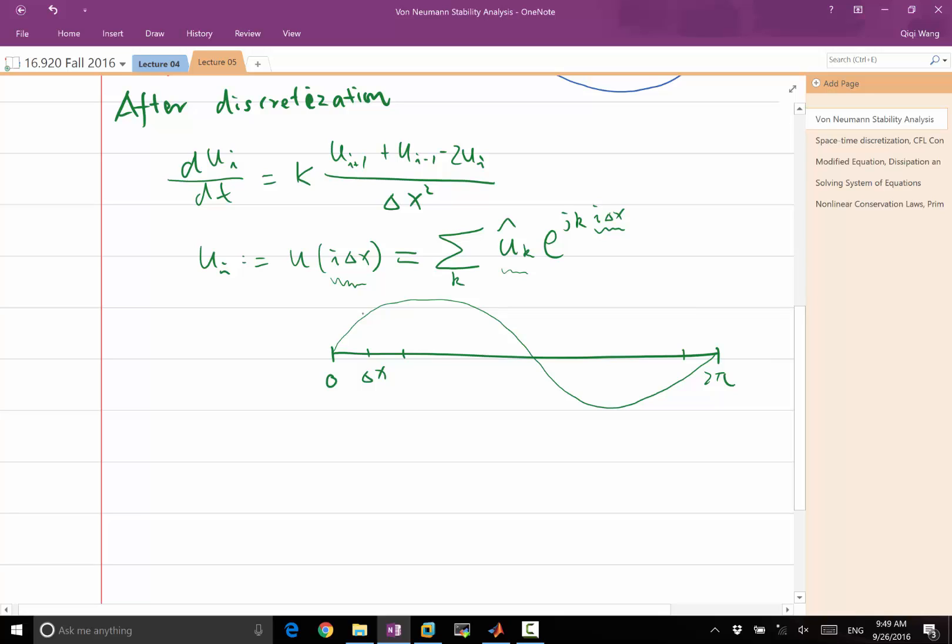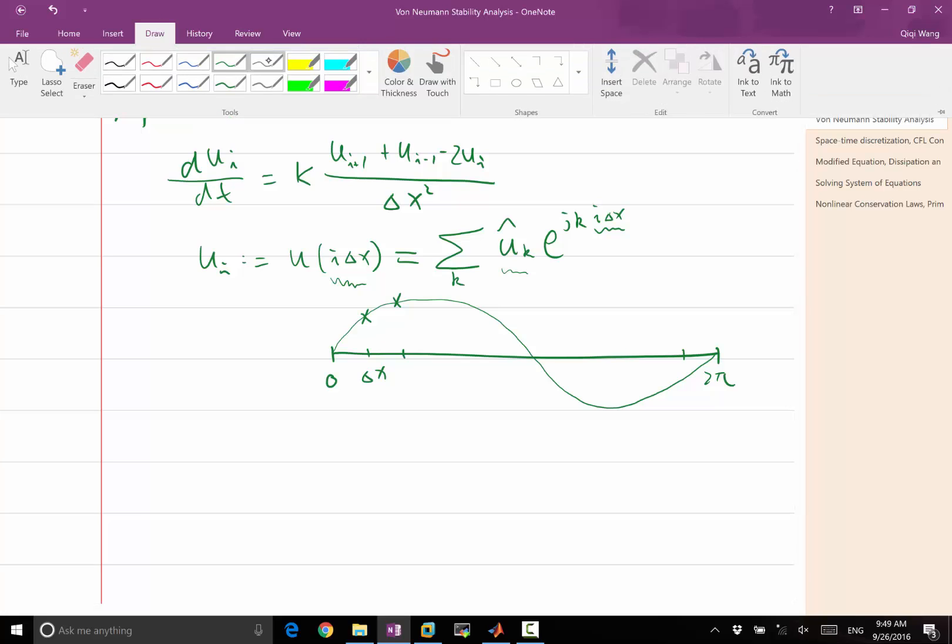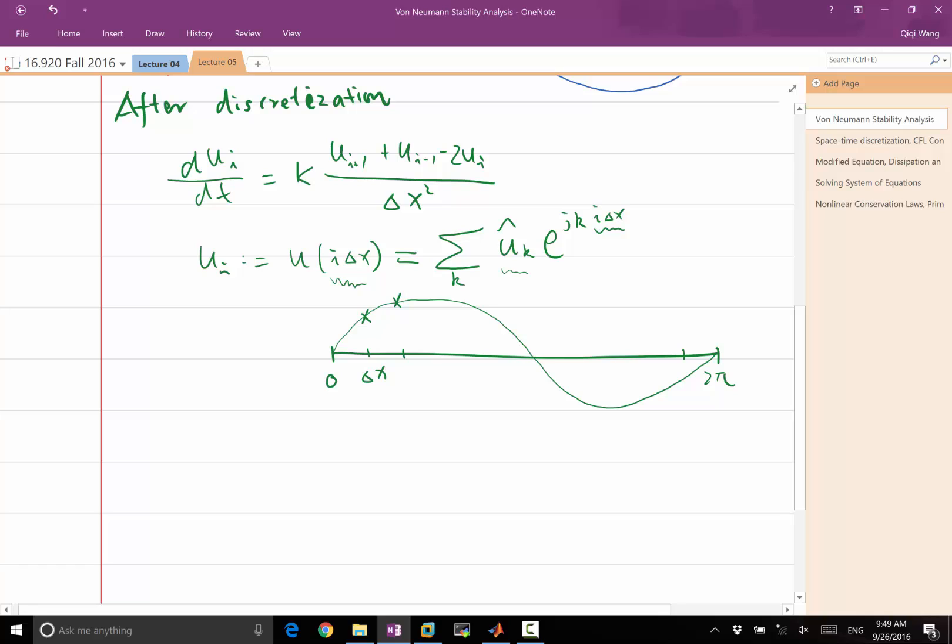Now, if I only look at the function value at the discrete points, I can actually draw a different wave that looks exactly the same on these discrete points. How do I draw that? Any idea how can I draw a different wave that has exactly the same value at these discrete points?